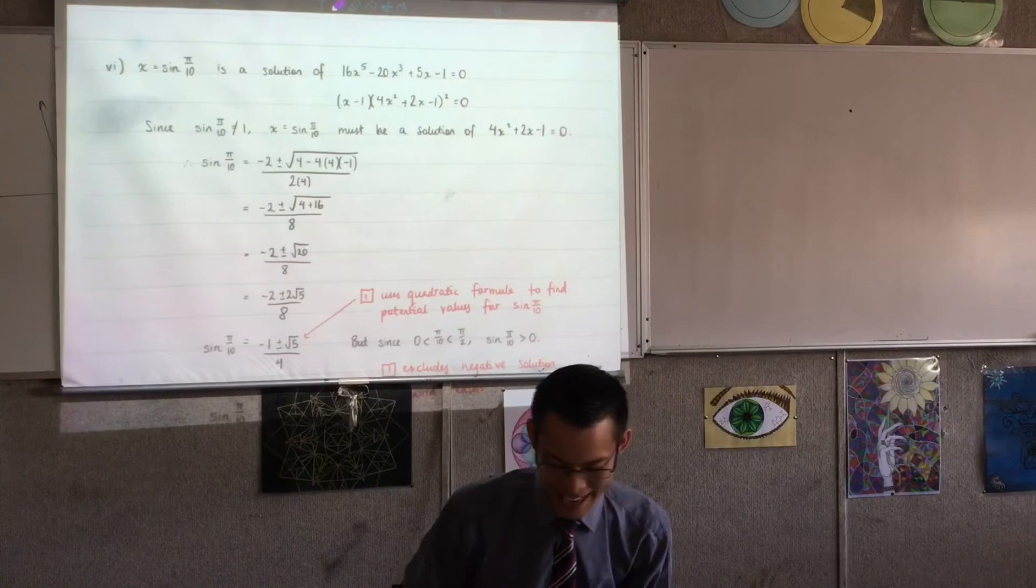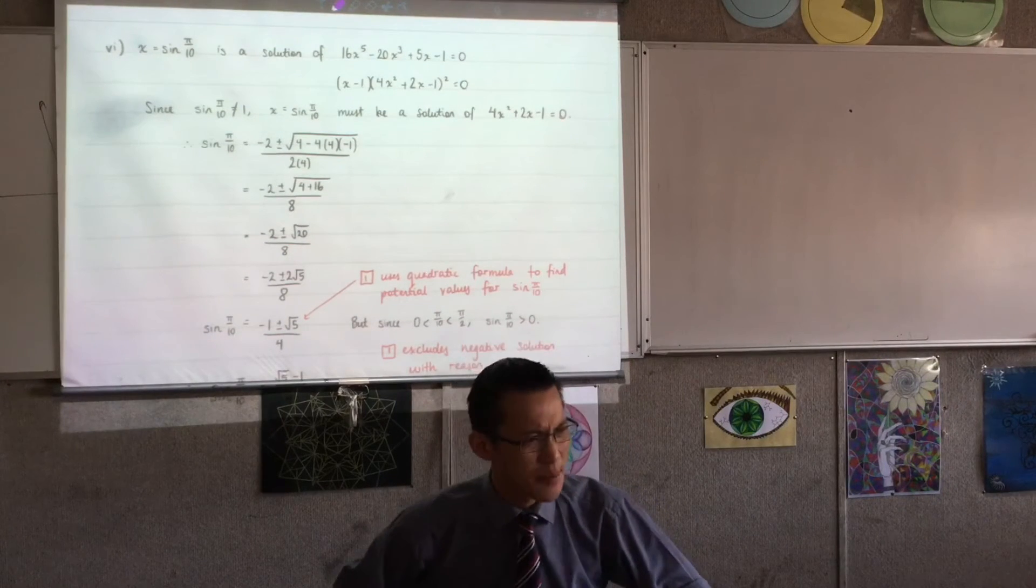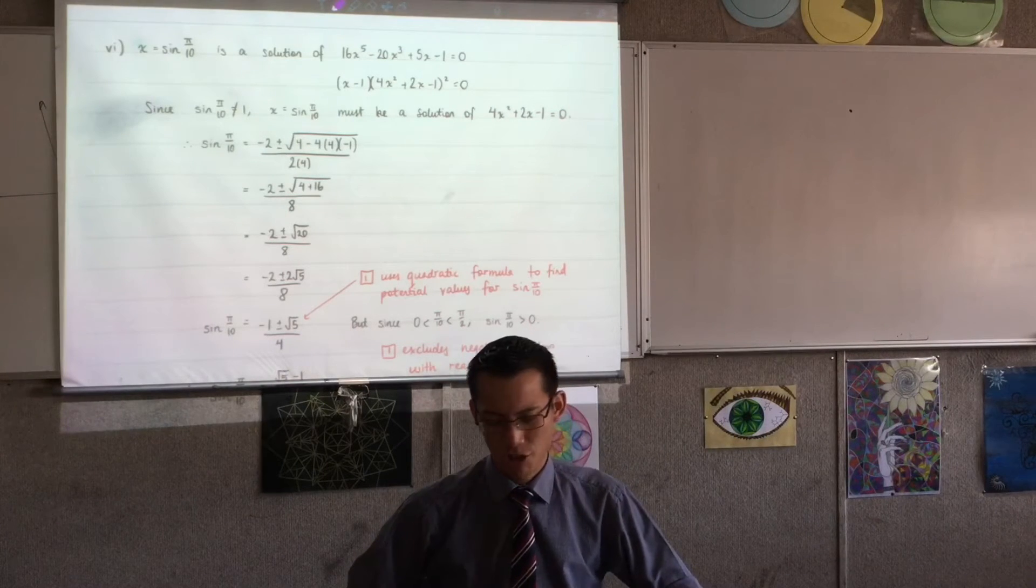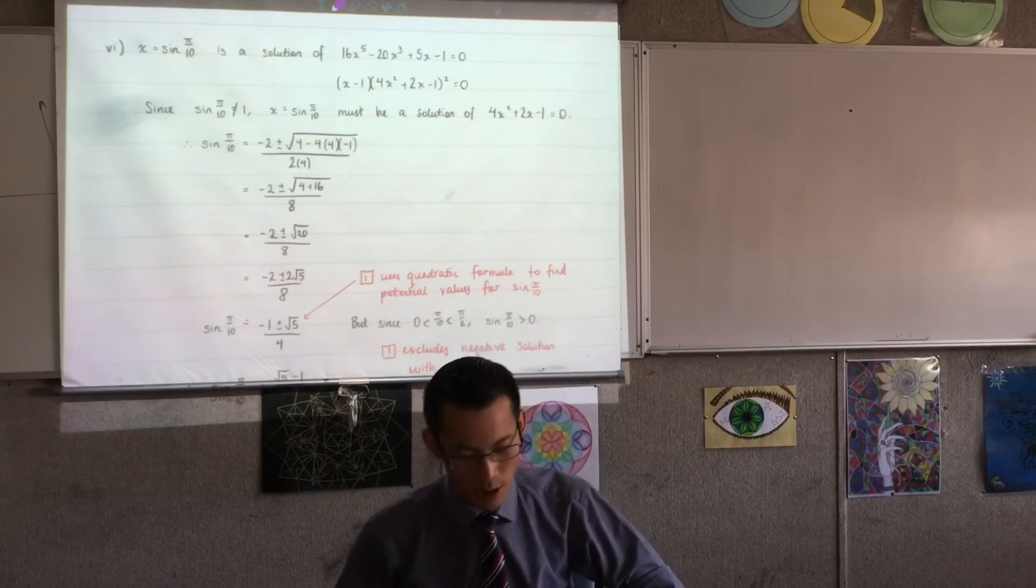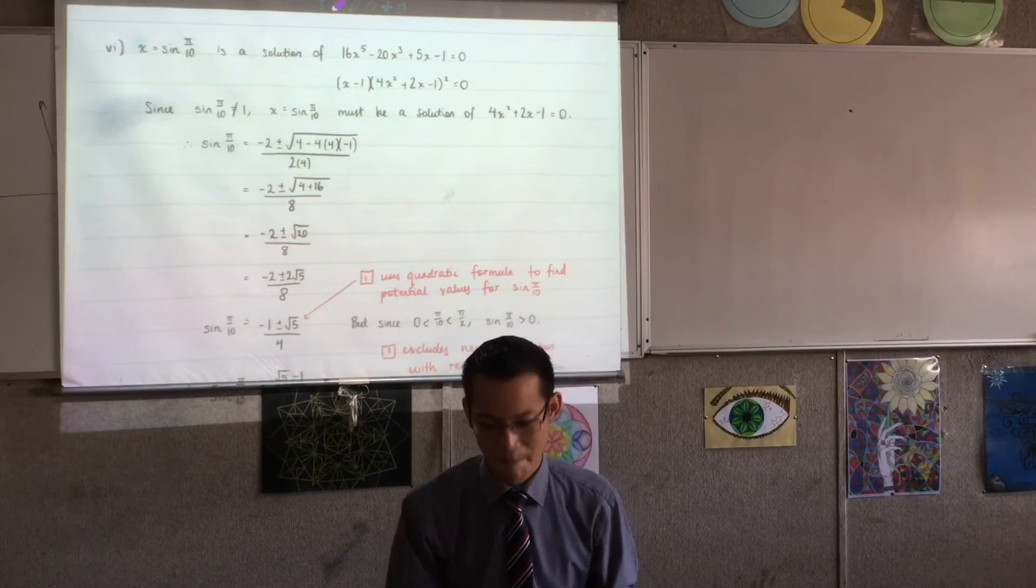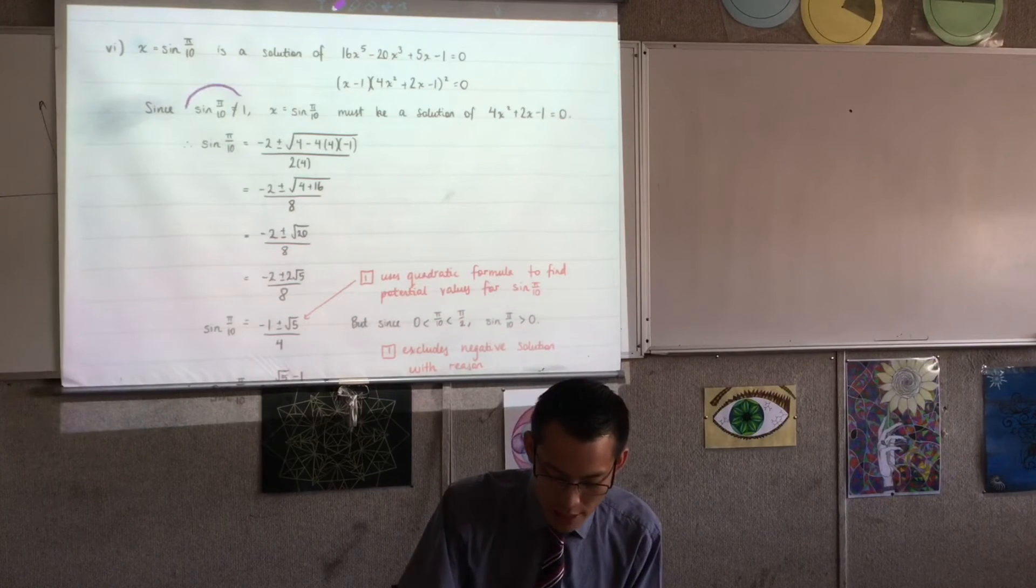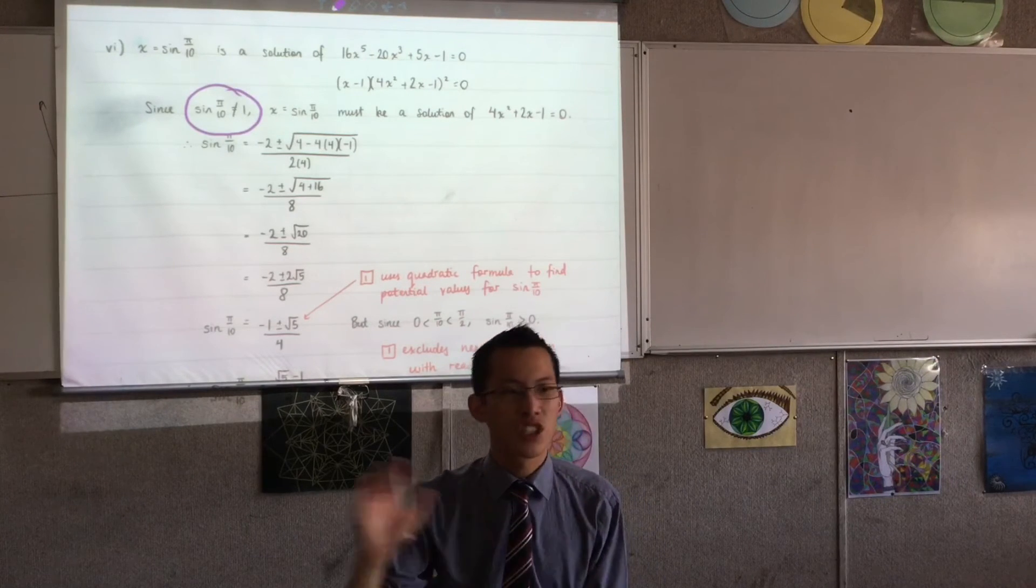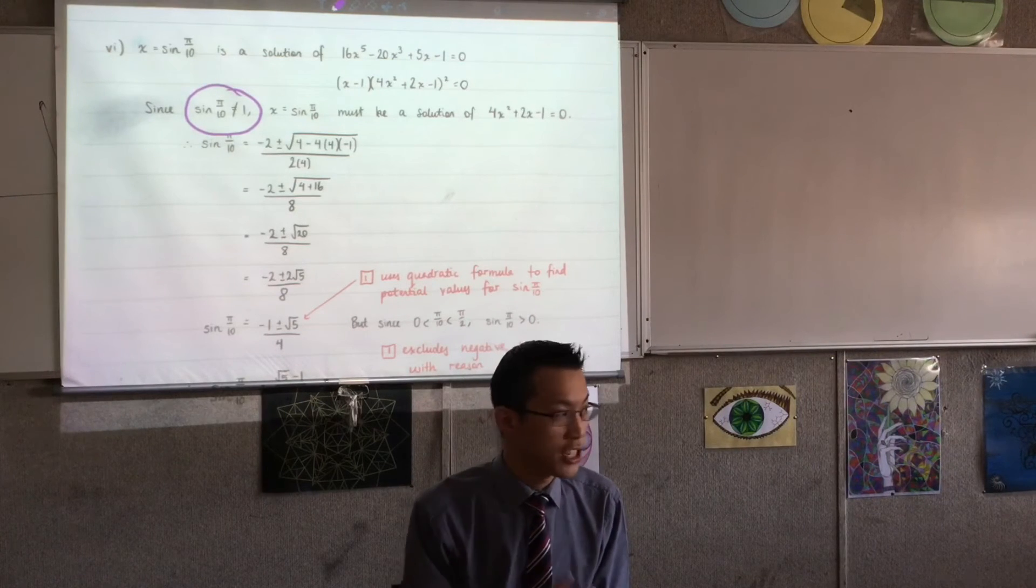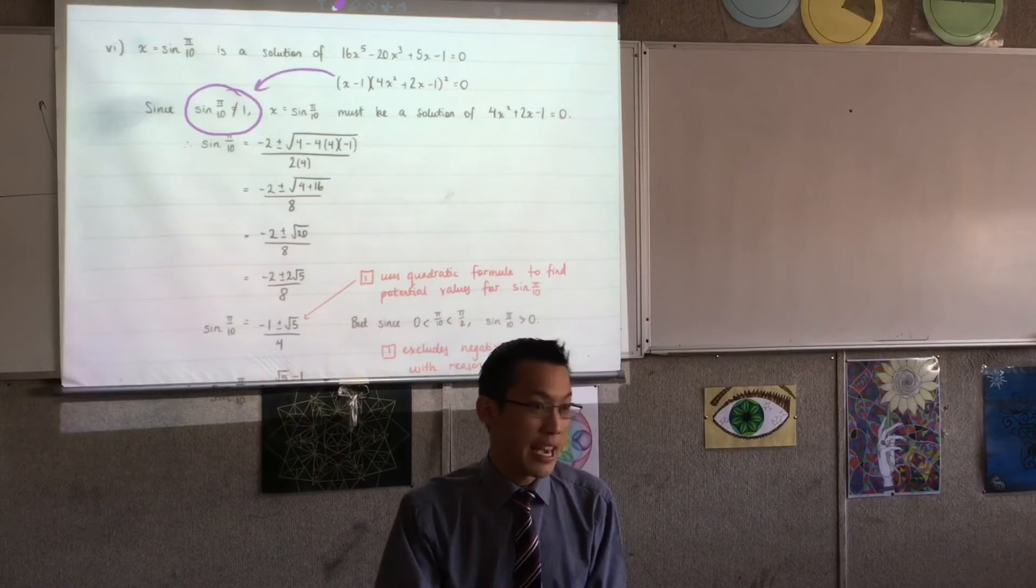Moving on, we're almost at the end. And this was done poorly and I was kind of surprised because this is a textbook question. It does come up in the HSC quite often. You've been led all this way to be able to find sine π/10, which is quite an astonishing result. I was looking for this kind of thing to be able to exclude the x minus 1, right? Sine π/10 can't possibly be equal to 1. You didn't need to reason it. You just had to state it so that you could exclude this answer.